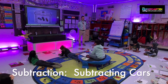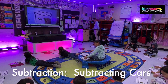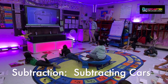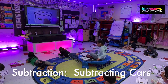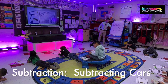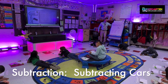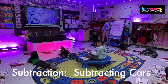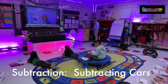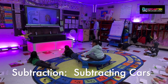How many cars are we going to take away? Two. So take two cars out of your garage. And what's our answer? One. Because how many cars are left? One. All right, so on our paper, let's write our equation. Three minus two equals one.